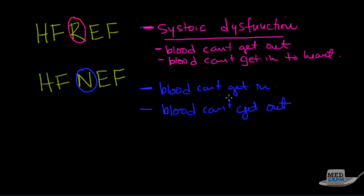Notice you have the same problems in both types of heart failure. But the key is the why, the reason why. You have heart failure due to a normal ejection fraction because blood can't get in. The reason why you have heart failure in a reduced ejection fraction is because blood can't get out.